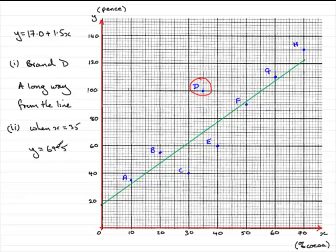So the price would be 69.5 pence, just short of that 70 pence that when you read off on the graph it seems to give.